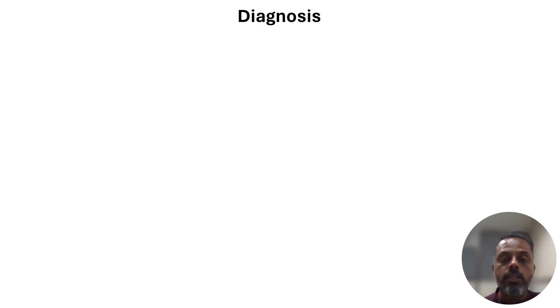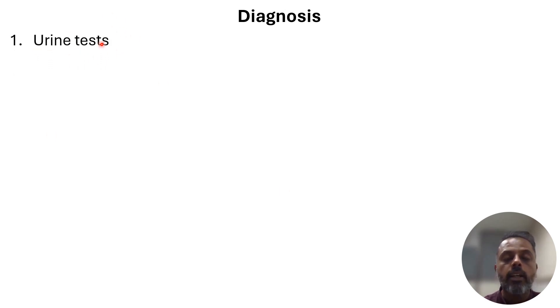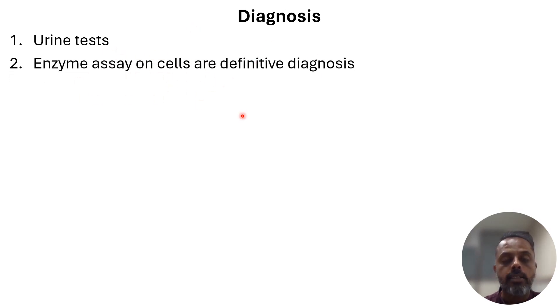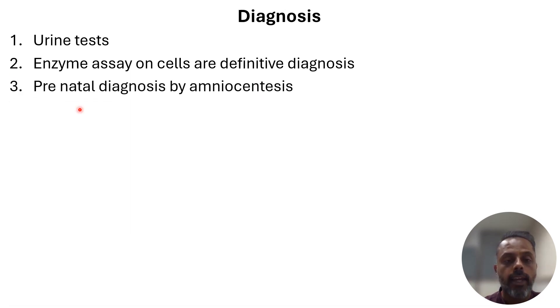How to diagnose mucopolysaccharidosis: it is associated with intralysosomal accumulation of different types of mucopolysaccharides, which are also excreted in the urine. So you can observe the presence of mucopolysaccharides in urine for diagnosis. The definitive mode of diagnosis is by performing enzyme assay on cells. Pre-natal diagnosis is also possible with the help of amniocentesis.